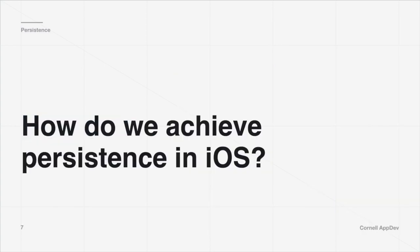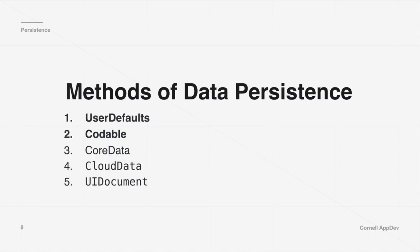One of the main ways to achieve persistence in iOS is through UserDefaults and Codable, and that's what we're going to spend most of our time talking about today. There are also other ways to persist data through CloudData, CoreData, and UIDocument, which are more complex frameworks that Apple provides developers for data storage, but because they're more complex we won't be covering those today.